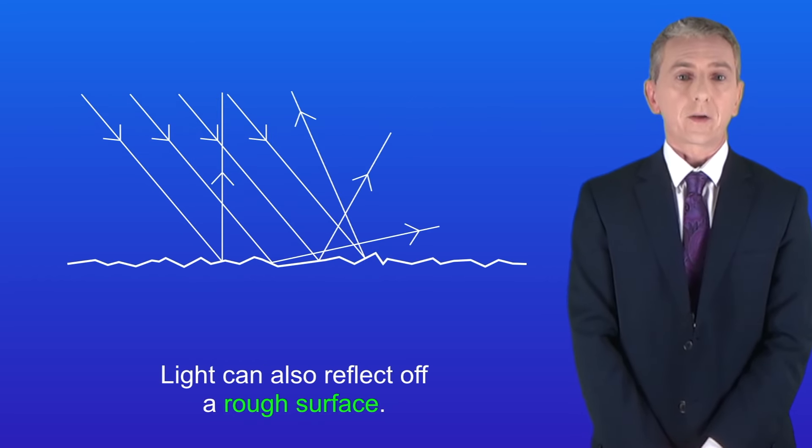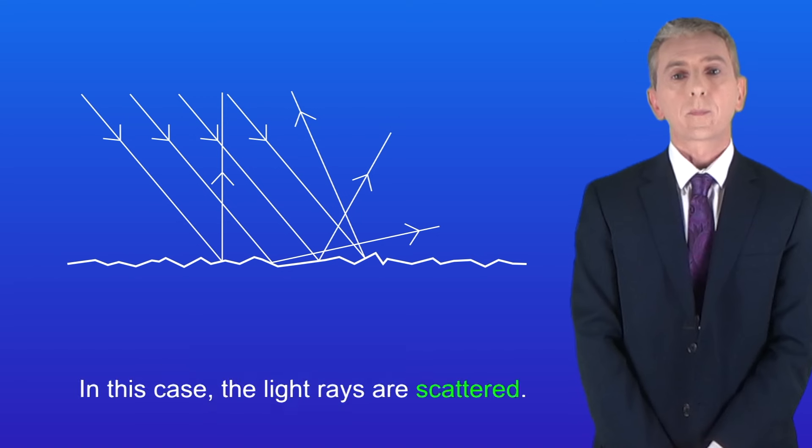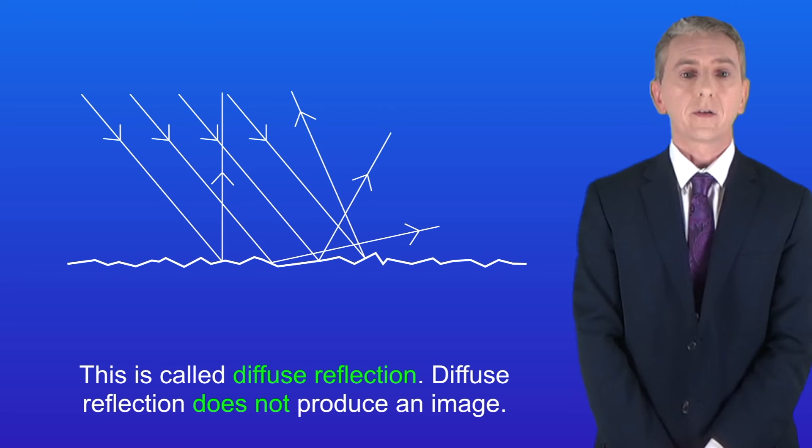Now light can also reflect off a rough surface like this. In this case the light rays are scattered. This is called diffuse reflection and diffuse reflection does not produce an image.